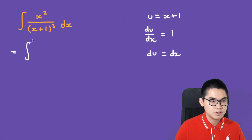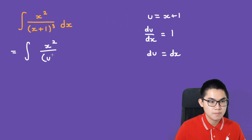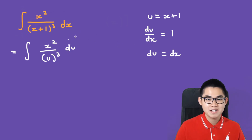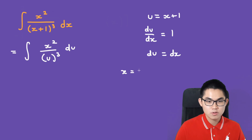Now let's substitute x into u. In the numerator, x squared remains, and (x plus 1) in the denominator becomes u, so we have u to the power of 3, and dx is simply du. Since u equals x plus 1, we get x equals u minus 1.